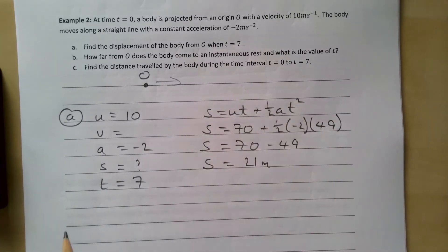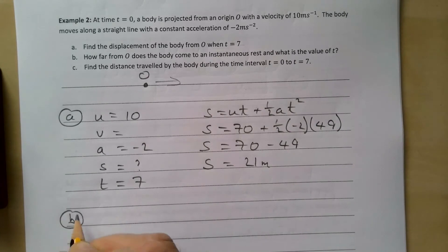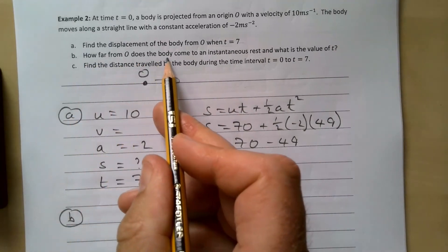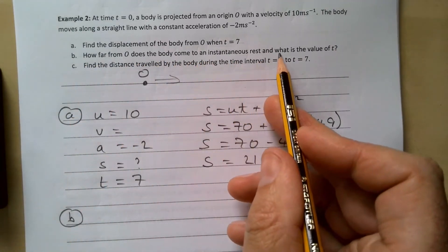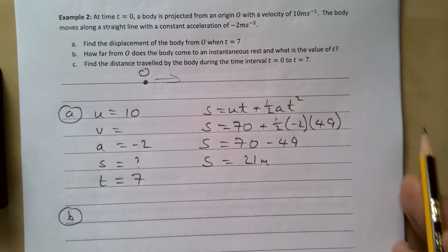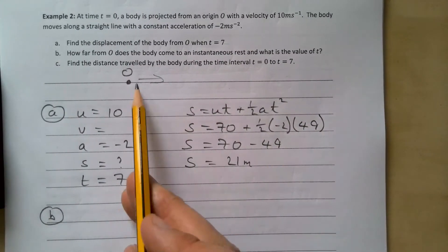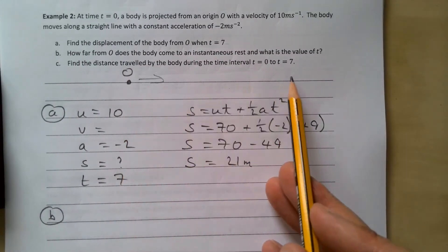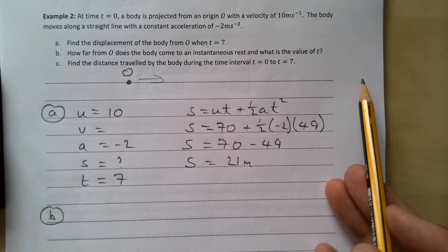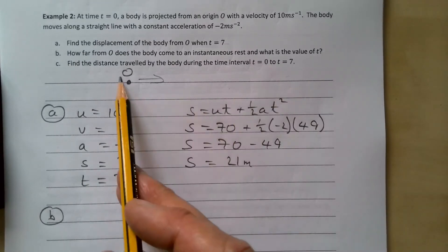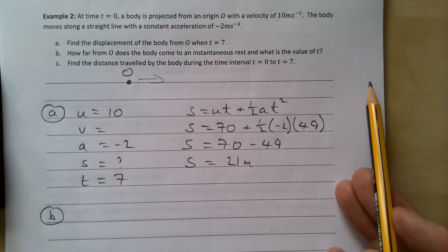Let's take a look at part b. How far from zero does the body come to instantaneous rest and what is the value of t? So as we said, it heads out this way and it gets slower and slower until it hits rest and then comes back this way. So it just instantaneously stops.